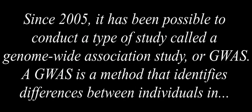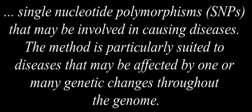Genome-Wide Association Studies. Since 2005, it has been possible to conduct a type of study called a Genome-Wide Association Study, or GWAS. A GWAS is a method that identifies differences between individuals in single nucleotide polymorphisms, or SNPs, that may be involved in causing diseases. The method is particularly suited to diseases that may be affected by one or many genetic changes throughout the genome.